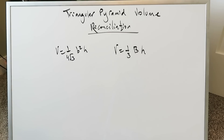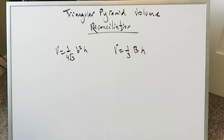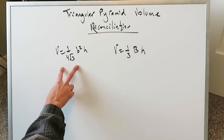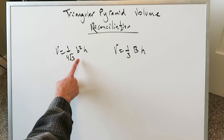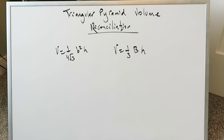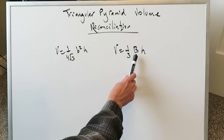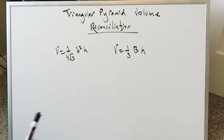I presented a video not too long ago on triangular pyramid volume. In that video, using integral calculus, we came up with the formula 1 over 4 root 3 times B squared times H. But we know in terms of geometry in high school, what we are initially introduced to for these triangular pyramids is volume equals 1 over 3 times base times height. The question brought up in the comment section is how can you reconcile the two? In that video, I verbally said they can be reconciled, but I never showed the reconciliation. In this video, we're going to show you that reconciliation.